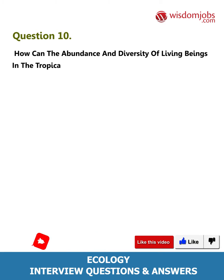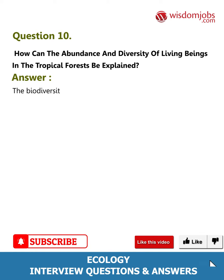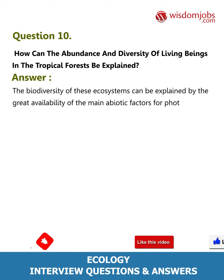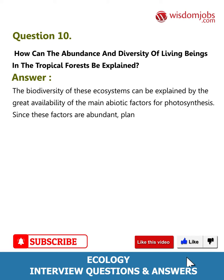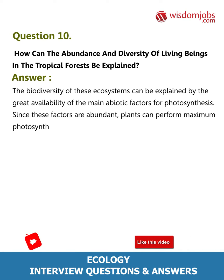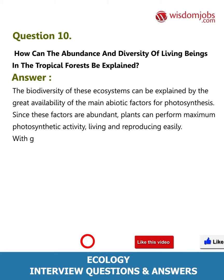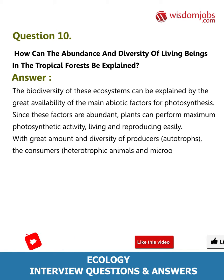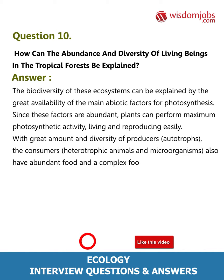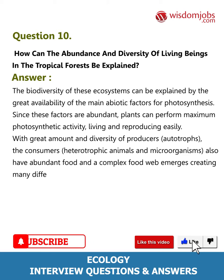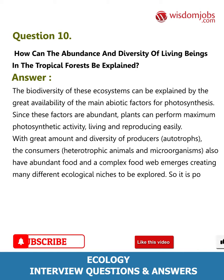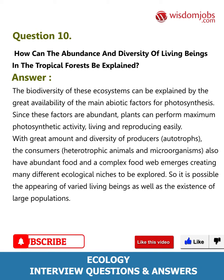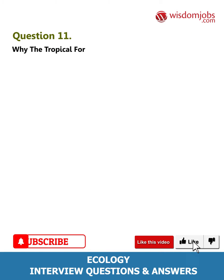Question 10: How can the abundance and diversity of living beings in the tropical forests be explained? The biodiversity of these ecosystems can be explained by the great availability of the many abiotic factors for photosynthesis. Since these factors are abundant, plants can perform maximum photosynthetic activity, living and reproducing easily. With a great amount and diversity of producers (autotrophs), the consumers (heterotrophic animals and microorganisms) also have abundant food, and a complex food web emerges, creating many different ecological niches, allowing the appearance of varied living beings and large populations.